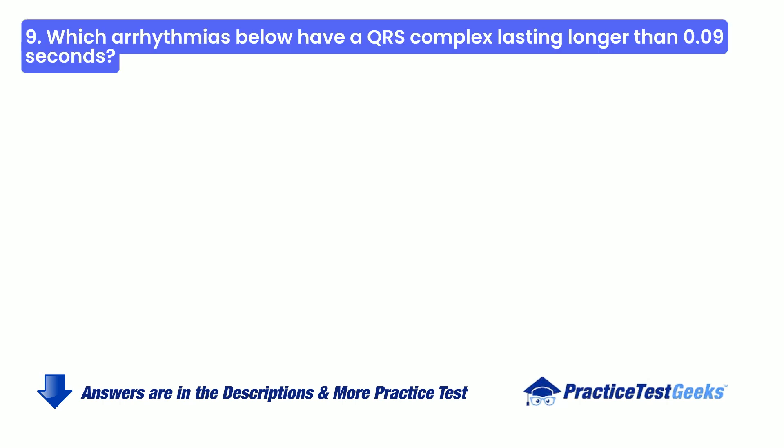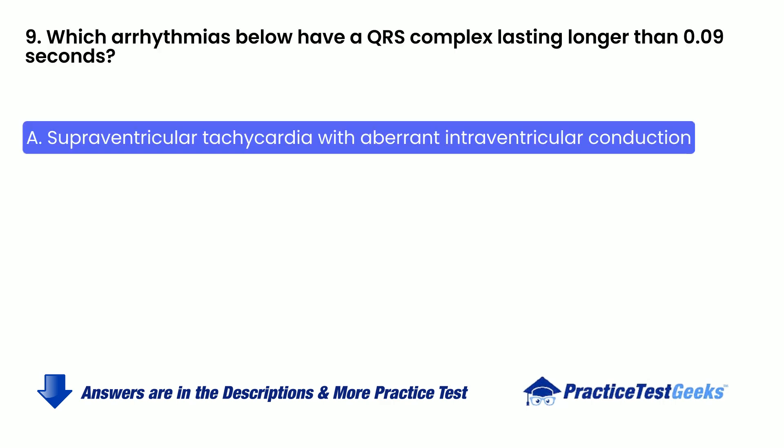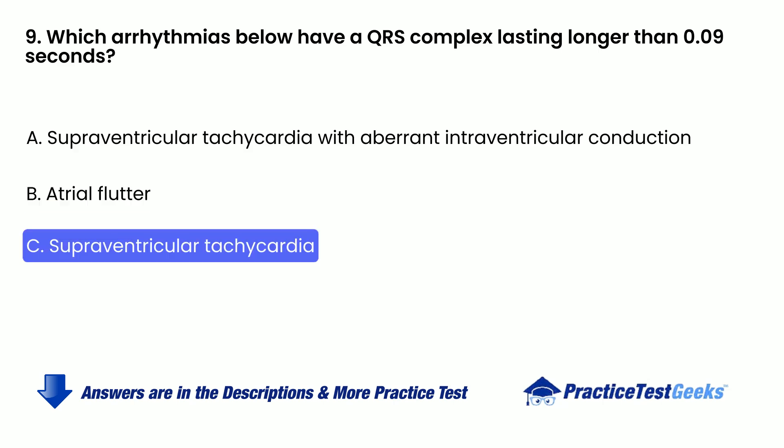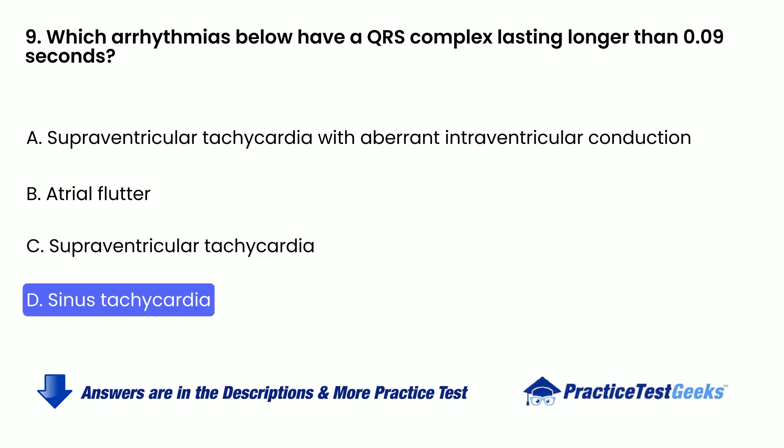Which arrhythmia below has a QRS complex lasting longer than 0.09 seconds? A. Supraventricular tachycardia with aberrant intraventricular conduction. B. Atrial flutter. C. Supraventricular tachycardia. D. Sinus tachycardia.